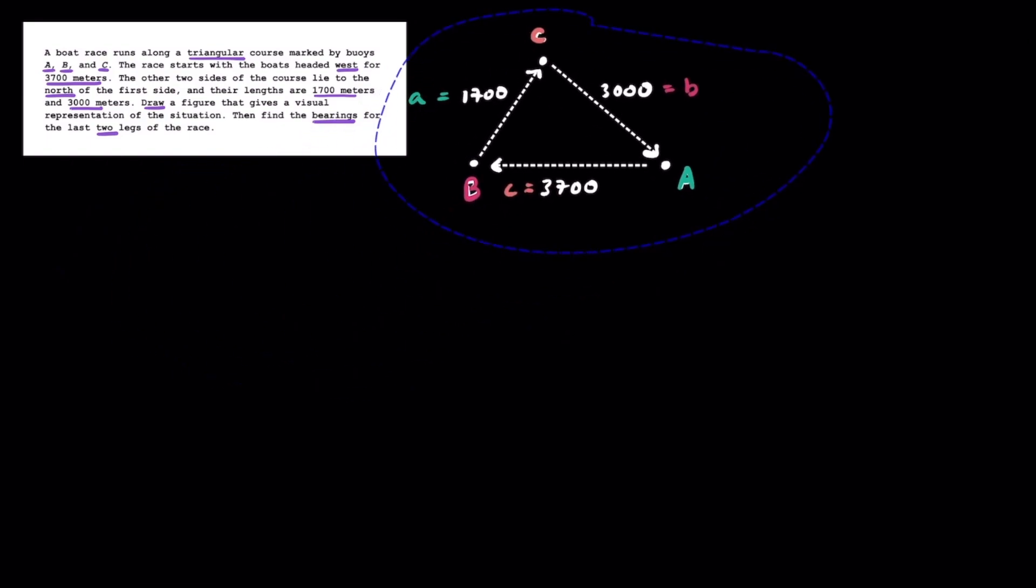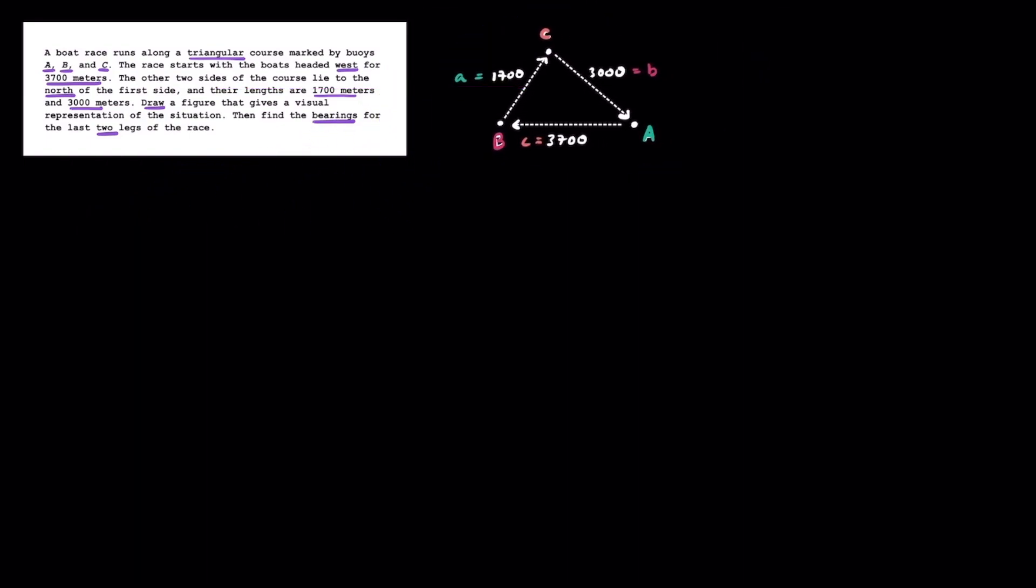So we're going first from A to B. Since they're going around this race, they're going from B to C, and finally they'll be going from C to A at the end. We're told that they're going 3,700 meters to the west first, so that must be this one. Then we have 1,700, which goes right here, and 3,000 on the last side. To keep things organized, I'll call this angle A, and let's make this side A the 1,700. For angle B, we'll call the 3,000 side B. And across from angle C, this 3,700 is going to be side C.